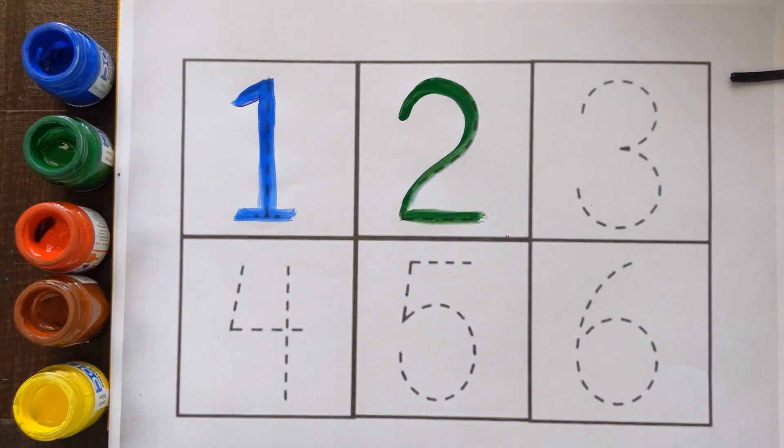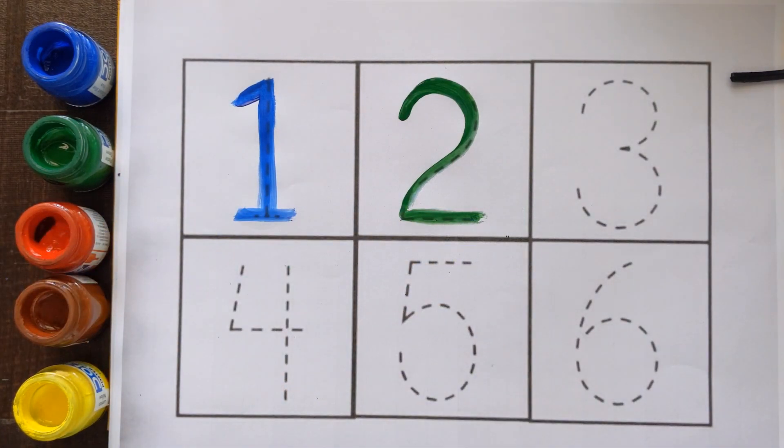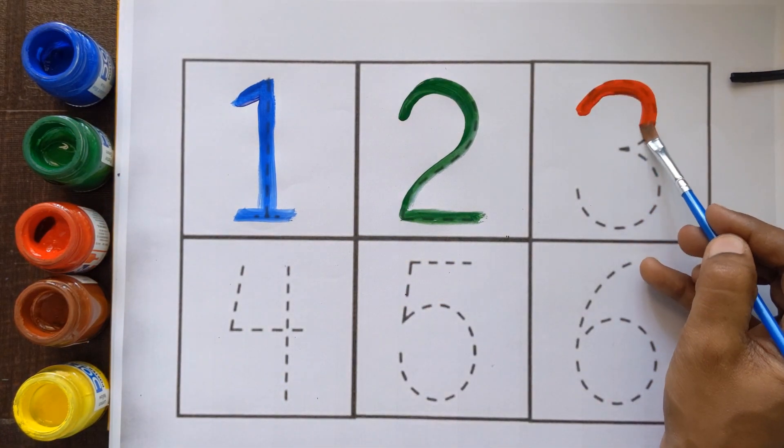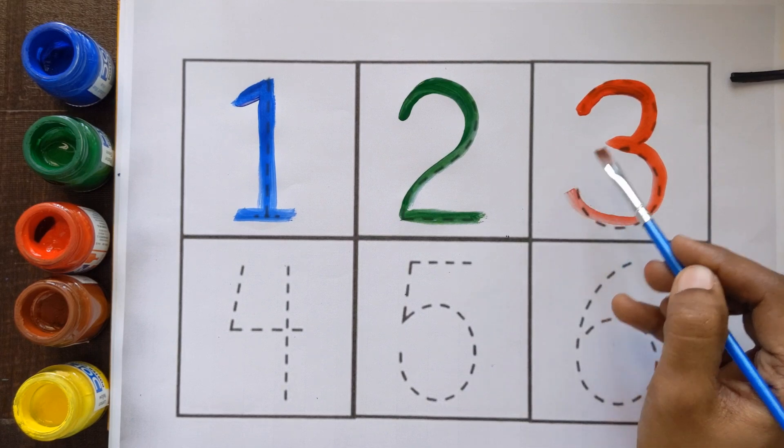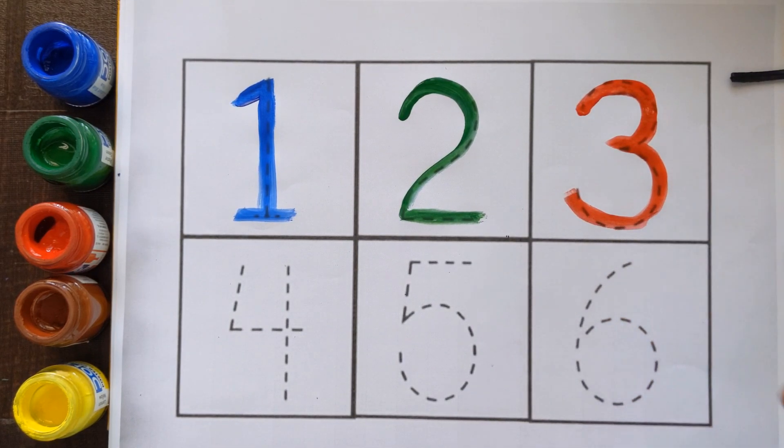After number 2, which number is this? Can you tell me? It's a number 3. Number 3 with the red color.